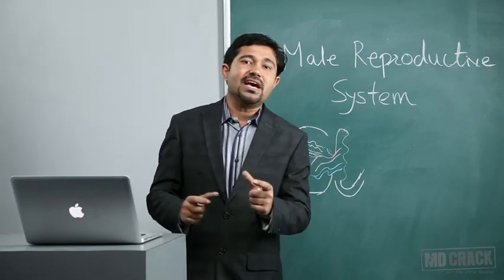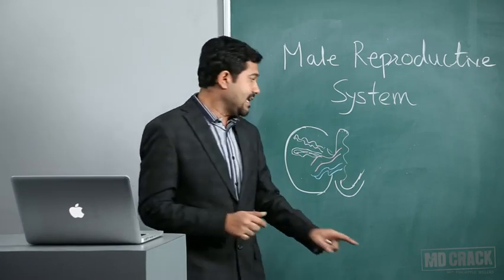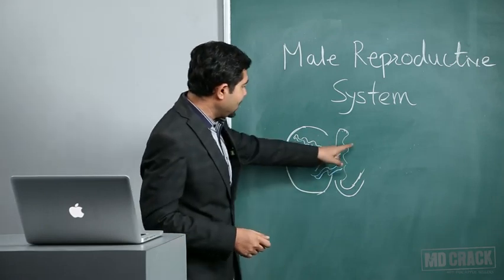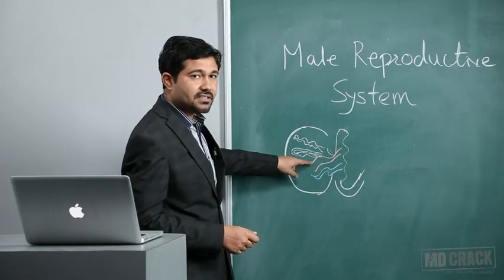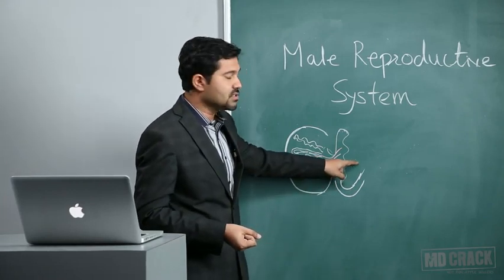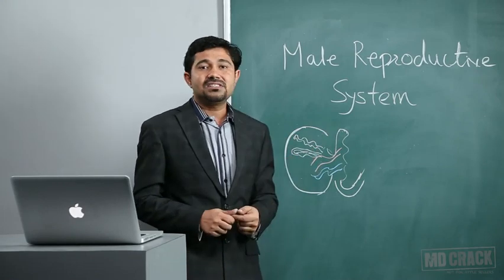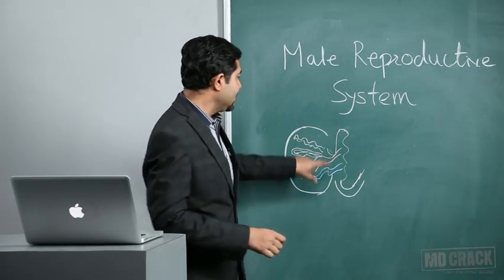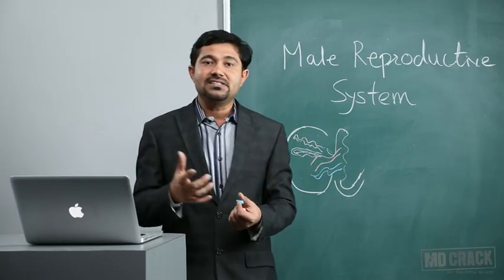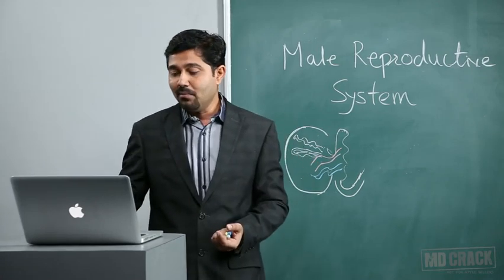The counter-current system helps maintain this lower temperature. Whenever blood passes through the spermatic arteries, the heat of the arterial blood is taken up by the venous blood moving away in the pampiniform plexus, so the testis receives blood at a lower temperature. This counter-current mechanism between the testicular artery and the pampiniform plexus is one mechanism by which testicular temperature is kept low.